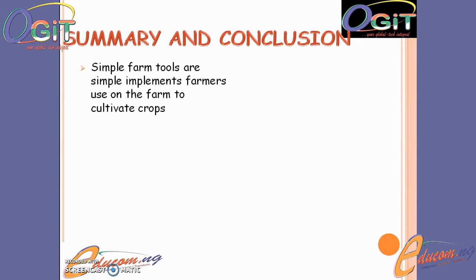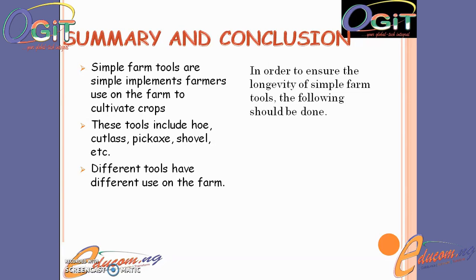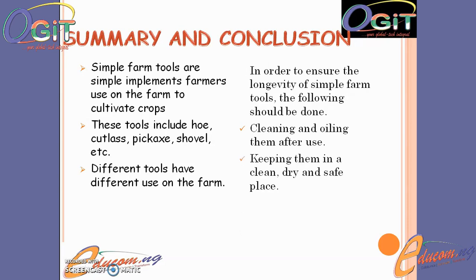In summary, in this class we talked about simple farm tools and defined them as simple implements farmers use on the farm to cultivate crops. They include tools such as the hoe, cutlass, pickaxe, shovel, and the likes. We stated that different simple farm tools are used for different purposes on the farm. We also talked about the care required for simple farm tools to ensure their longevity, including cleaning and oiling them after use, keeping them in a clean dry and safe place, and regular sharpening of metal edges used in cutting.